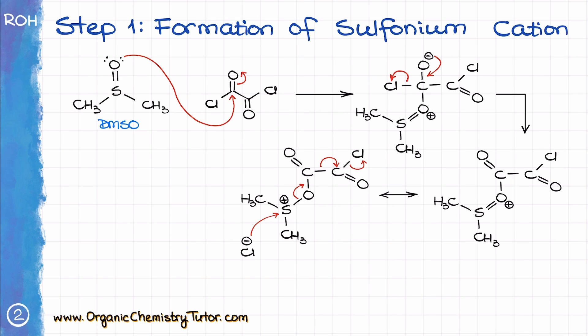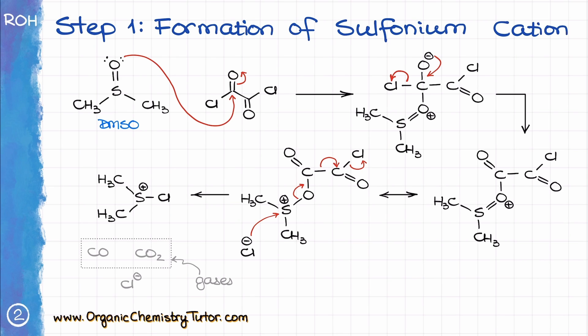This intermediate quickly undergoes attack by the released chloride anion from the previous step, forming the dimethyl chlorosulfonium chloride in this completely crazy cascade of electrons and a ton of gaseous products like carbon monoxide and carbon dioxide. To reiterate: the chloride attacks our sulfur, making the chlorine-sulfur bond; then the electrons from the sulfur-oxygen bond go towards the carbonyl, the carbon-carbon bond breaks, and we release the other chloride into the environment. This is a complex part of the mechanism, so make sure you practice it a few times so you can reproduce it on the test from memory.